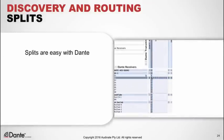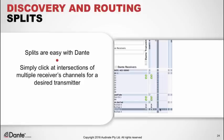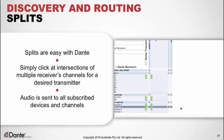Splits are easy with Dante but were often very difficult on earlier systems that required complex setup and caused ground loop problems. All we do is click the intersections of the desired transmitter channels and any multiple receiver channels — no special hardware or settings are required. The transmitter audio is simply sent to all receiver subscriptions. When splitting audio to more than three receiving devices, Dante Controller will present a fan-out message indicating that multicast use is recommended for optimal network efficiency. The topic of multicast is covered later.